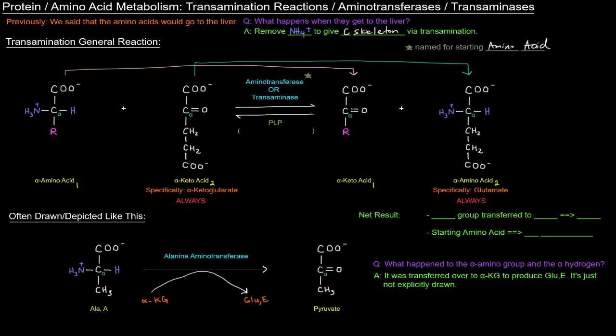So the net result of a transamination reaction is basically that the amino group, the NH4 plus group, is transferred to alpha ketoglutarate from the starting amino acid to produce glutamate. And the starting amino acid ends up being its carbon skeleton, which is the form we need it to be in in order for us to oxidize it for energy.